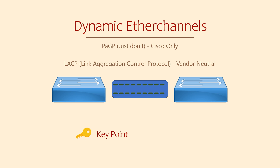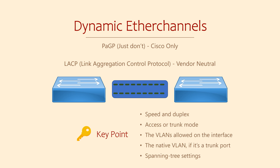LACP is used to check that both sides are suitable to form an EtherChannel. This means there are certain parameters that need to match on the physical interfaces for the EtherChannel to form. These include the speed and duplex, access mode or trunk mode, the VLANs allowed on the interface, the native VLAN if it's a trunk port, and spanning tree settings.